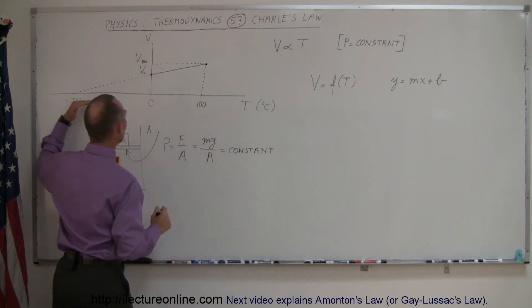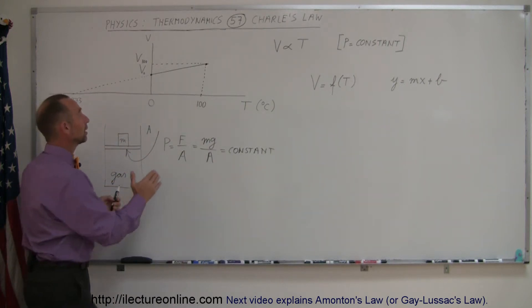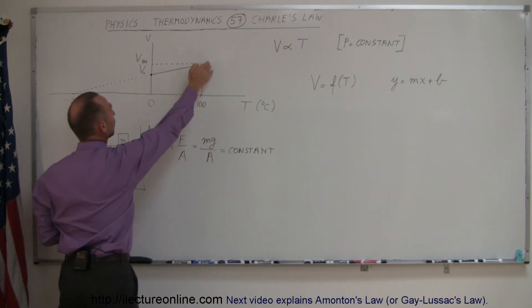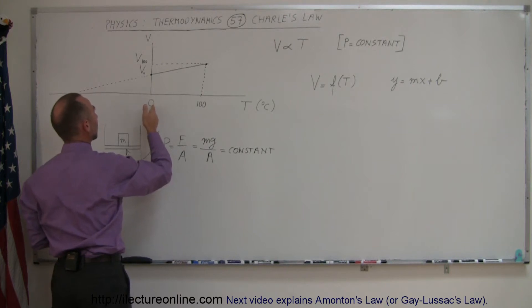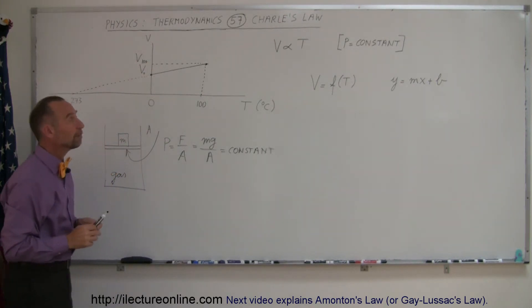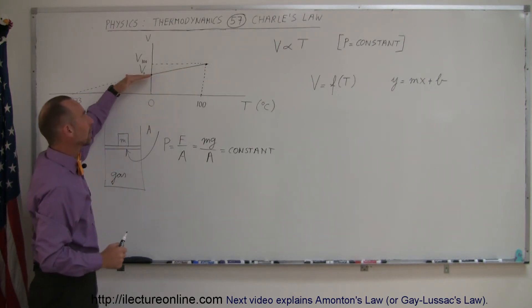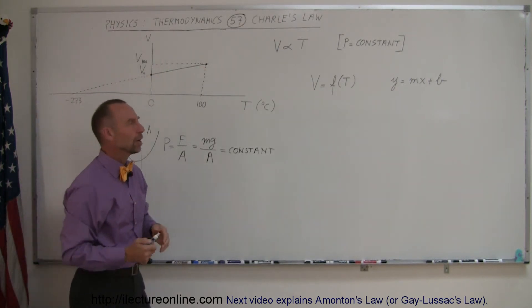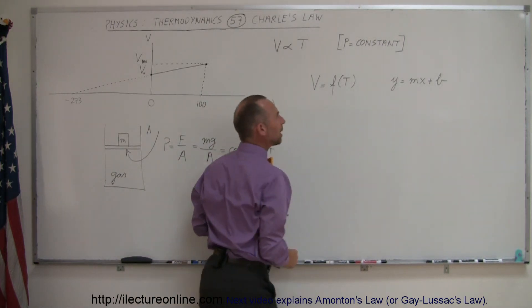They then plotted that on the chart. They measured the volume when the temperature was 100 degrees centigrade. They measured the volume when the temperature was 0 degrees centigrade. They noticed a delta V change in the volume. But they did notice that there was a straight-line relationship here, like the equation Y equals MX plus B.